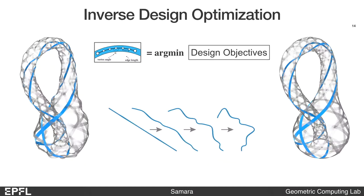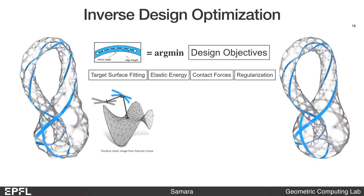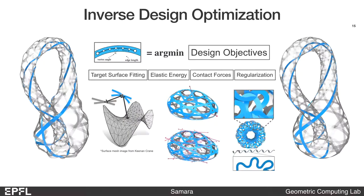Our objectives include approximating the target shape as closely as possible, reducing the elastic energy, and reducing the contact forces between the ribbons. We also have a regularization term to control the shape of the ribbons.